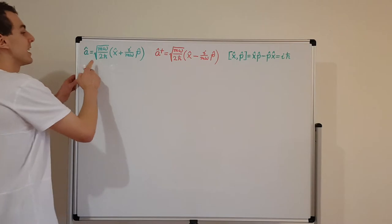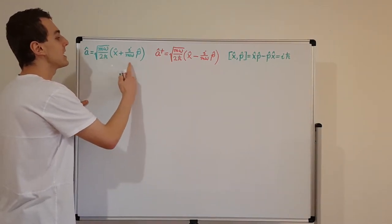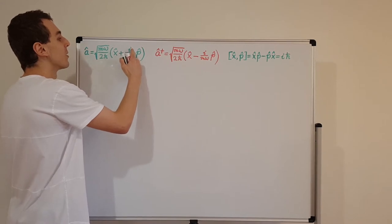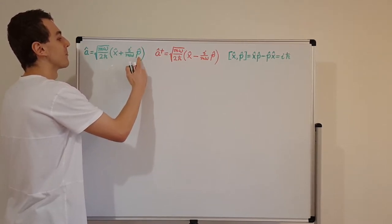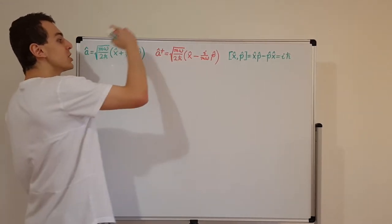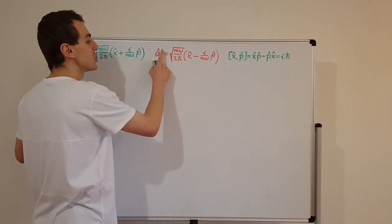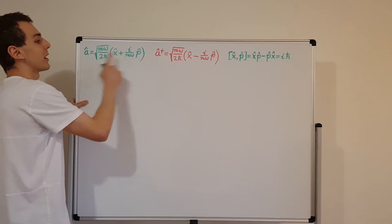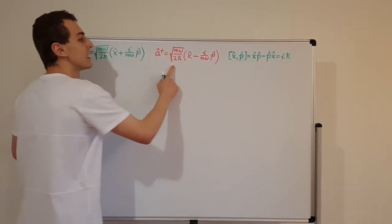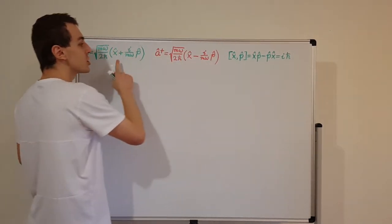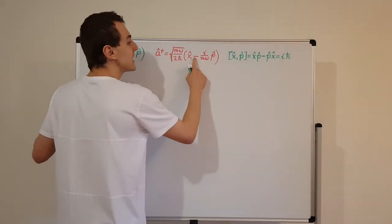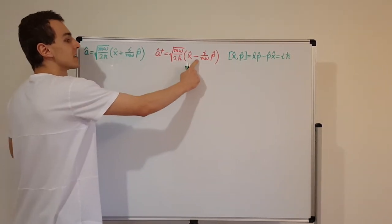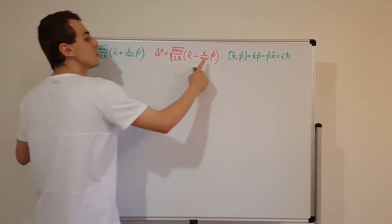A hat is defined in terms of position and momentum. We also have the imaginary unit i multiplying momentum over here. So when we take the Hermitian adjoint — this dagger notation tells us this is the Hermitian adjoint of a — a dagger is defined to be exactly the same expression, except there is a minus sign. This is the same as taking the complex conjugate; we have to turn i into minus i.